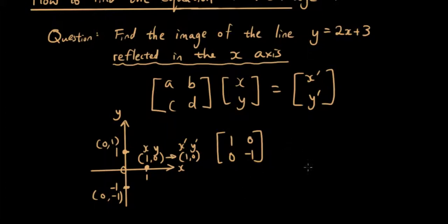Now if you want to test it, you can try testing it on a random point. Let's say we want to test it on 1, 2. So 1 times 1 is 1, 0 times 2 is 0, so that's 1. And then 0 times 1 is 0, negative 1 times 2 is negative 2.